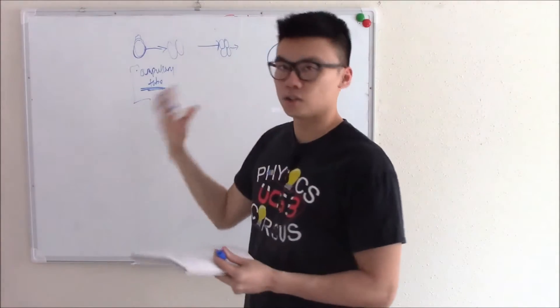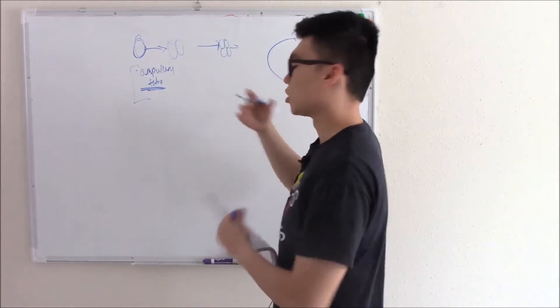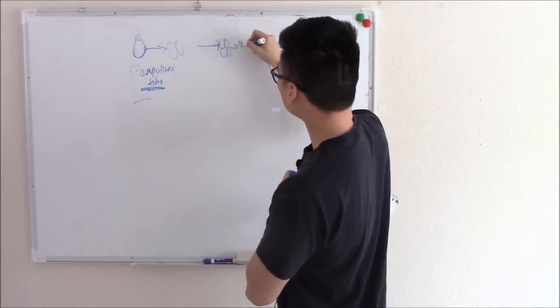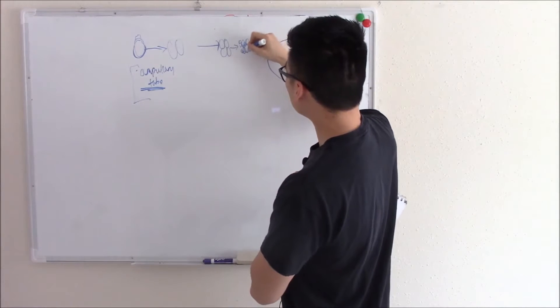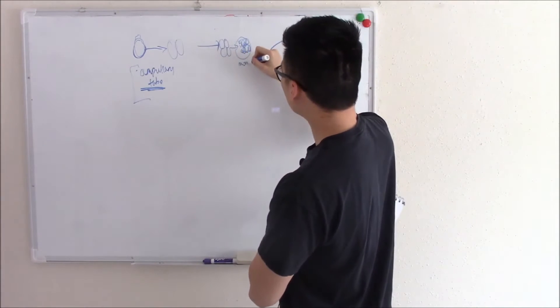It'll keep dividing two to four, four to eight, etc., until it becomes a cluster of cells called the morula. So this cluster of cells called the morula.